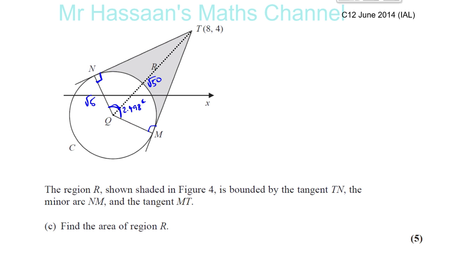In part C, we are asked to find the area of region R, which is a shaded region in the figure. We see that it's bounded by the tangent TN, the minor arc NM, and the tangent MT.